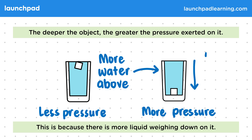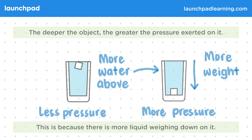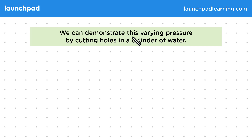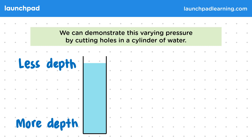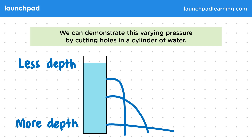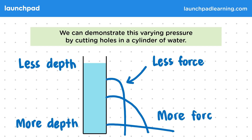The weight of the water pushes the surrounding water particles into it more. We can demonstrate this varying pressure by cutting holes in a cylinder of water. The pressure the water enacts on the cylinder increases with depth, so when we cut holes in the cylinder, the pressure accelerates water out of the hole with different trajectories, because more pressure equals more force — the water from holes at the bottom accelerates with more force.